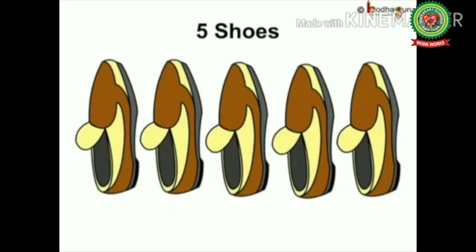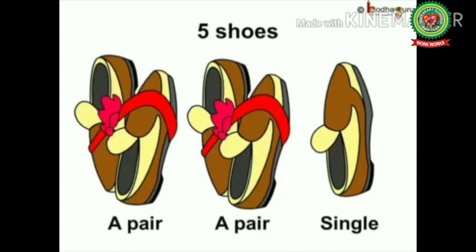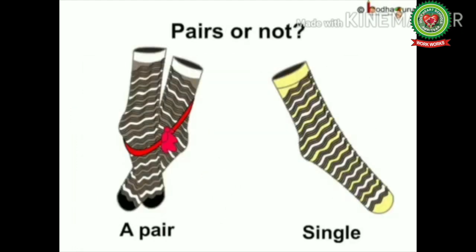Now how many shoes can you see in the picture? One, two, three, four, five. How many pairs can we make? One and two make a pair, three and four make a pair, but the fifth one is left alone. So we have two pairs and one single shoe remaining. We can make pairs with two and four, but we cannot make a pair with three or five.